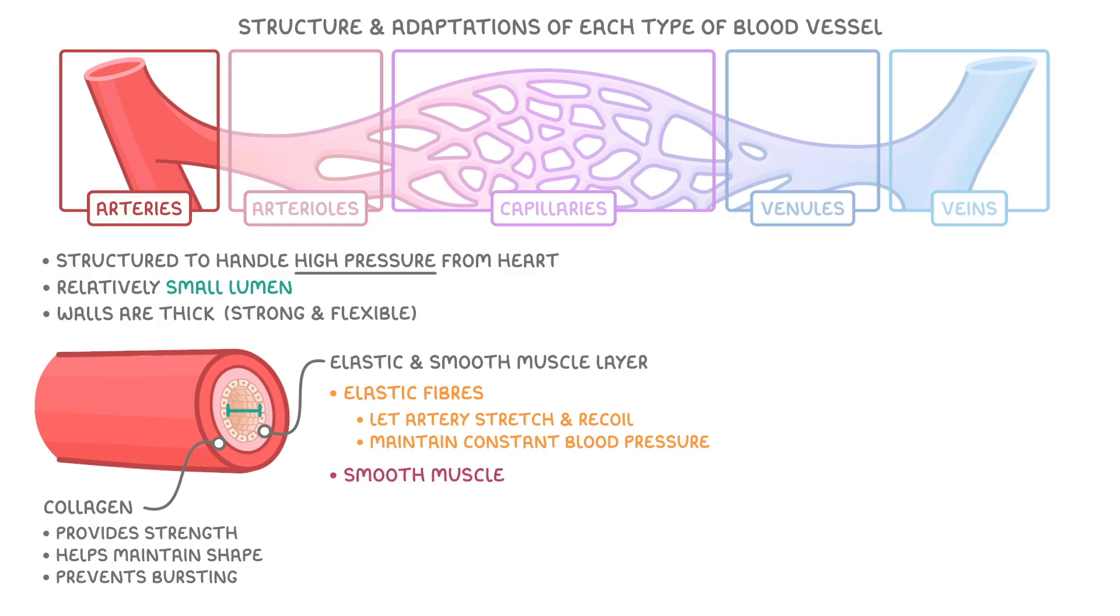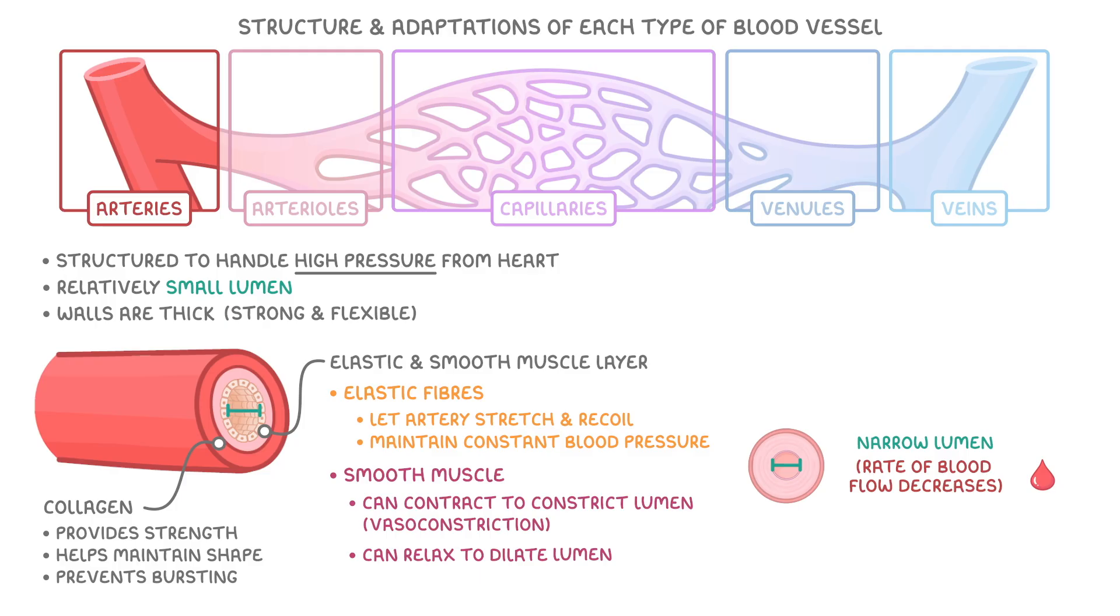The smooth muscle is important because it can contract or constrict the lumen of the artery, which we call vasoconstriction. If we grab a cross section through a vasoconstricted artery, we've got a really narrow lumen, and because of this the rate of blood flow decreases. The smooth muscle can then relax to dilate the lumen again. The term for this is vasodilation.